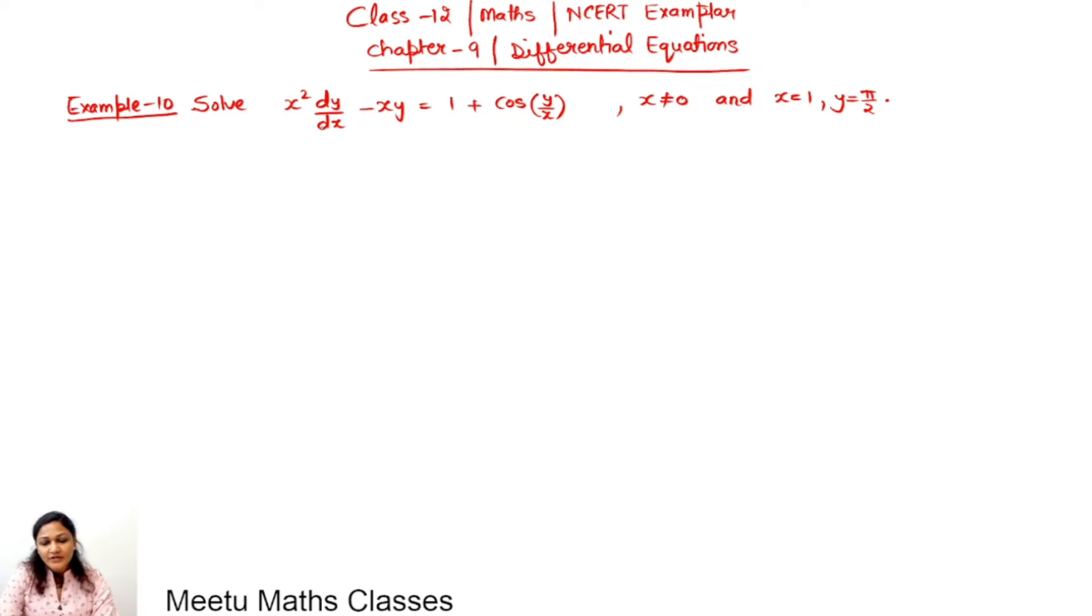Solve your differential equation: x squared dy by dx minus xy equals 1 plus cos y by x.